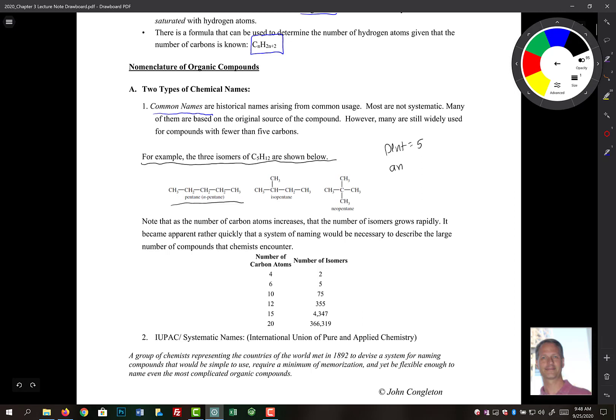That would give us something called pentane. Notice here that pent means five, and then the A-N-E ending means that you have an alkane. So there's pentane.